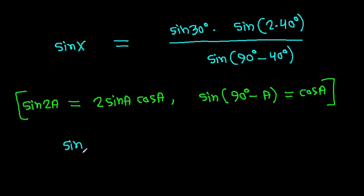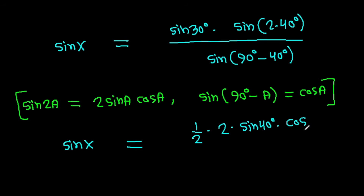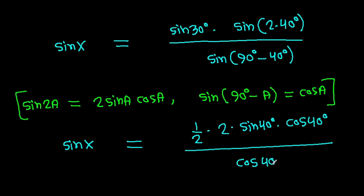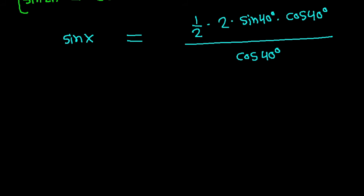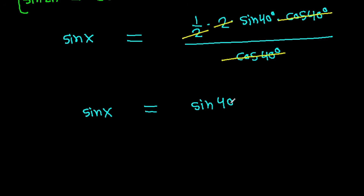So sine X equals sine 30 degrees, which is 1 over 2, times sine 80 degrees over sine 50 degrees. Expanding: sine 80 degrees equals 2 times sine 40 degrees times cos 40 degrees, and sine 50 degrees equals cos 40 degrees. The 2 and cos 40 degrees cancel, giving sine X equals sine 40 degrees, therefore X equals 40 degrees.